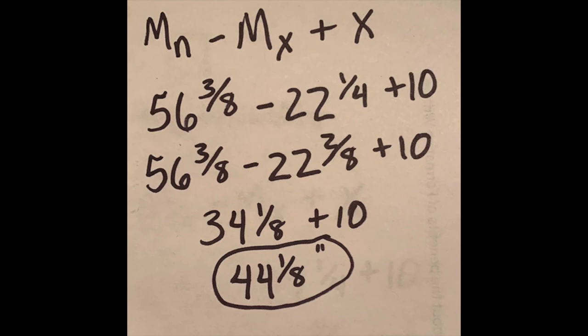Here's a second example with post B. This time the measurement was 56 and 3/8ths, so we had to change our common denominator to 8ths, and we end up with 44 and 1/8th inches.